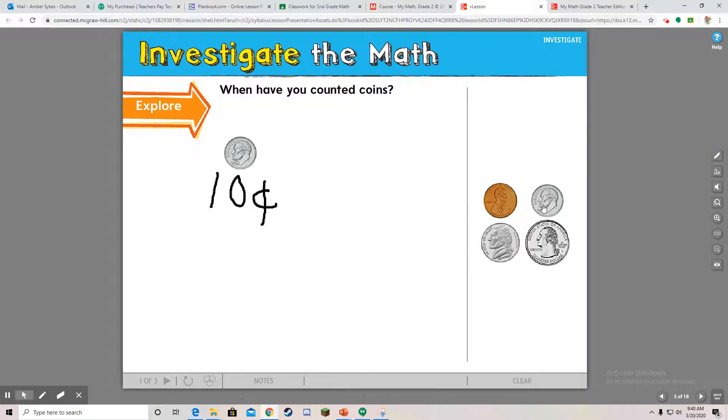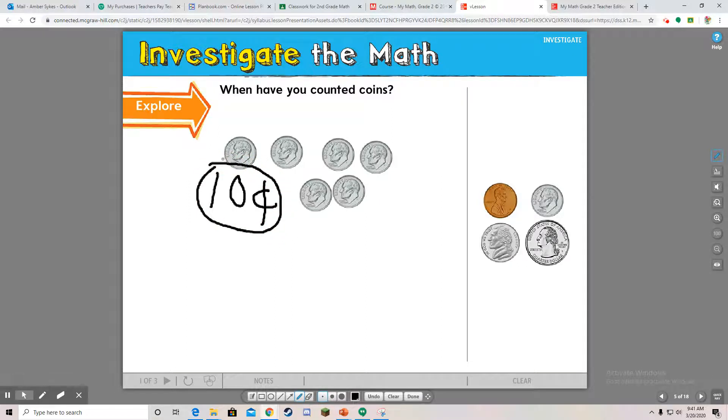So if I have a lot of dimes, let's count. One, two, three, four, five, six. How much do I have, guys? We would count by tens. Every dime is worth ten cents, so we would count by ten. So we have ten, twenty, thirty, forty, fifty, sixty. Even in a pile like that, you can still count it easily enough. So six dimes are worth sixty cents because every dime is worth ten cents. Ten, twenty, thirty, forty, fifty, sixty. Easy peasy.